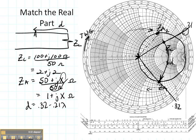And then I found the distance by reading on the outside axis in the wavelengths toward the generator. I subtract 0.32 off from 0.21 and that tells me the distance that I need to go.